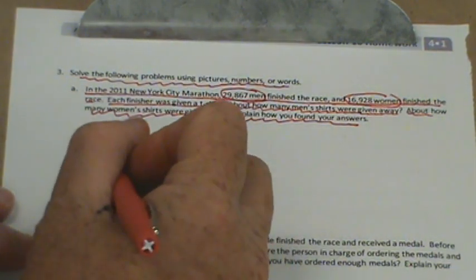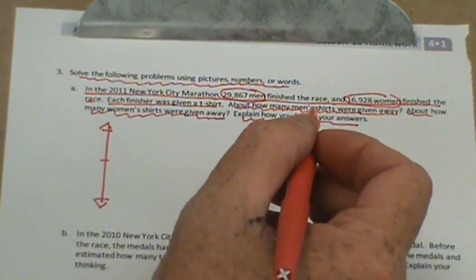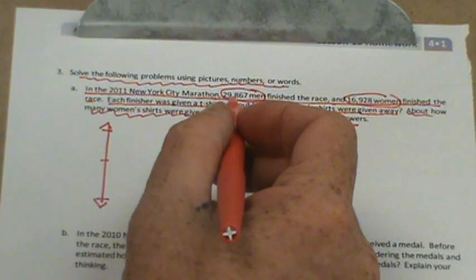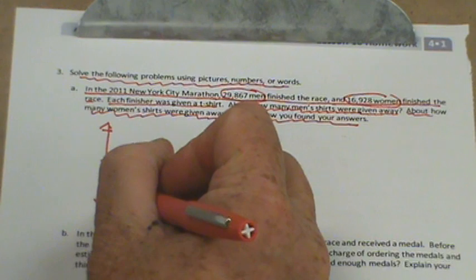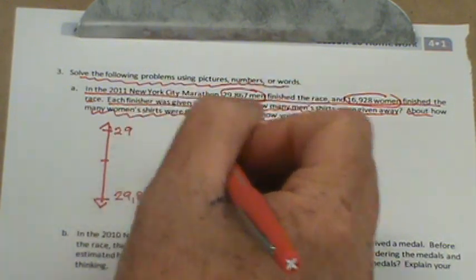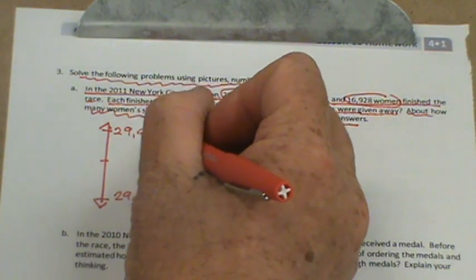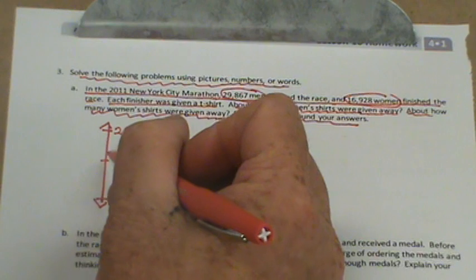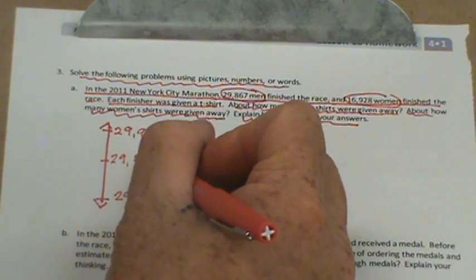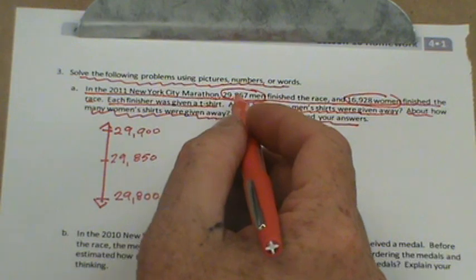29,867. So let's round to the nearest hundred. We can round to the nearest thousand. Let's do to the nearest, we can keep it real and go to the nearest hundred. So let's do 29,800. And the top notch would be 29,900. What would our middle point be? It'd be 29,850. So this is 29,867. We'll do 29,867. And what would we round? We'd round up to 29,900.